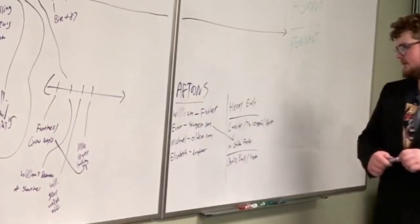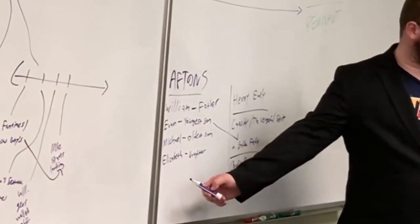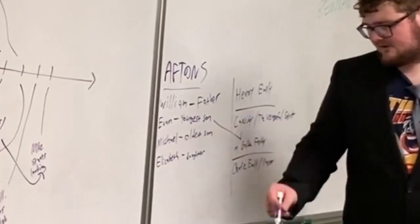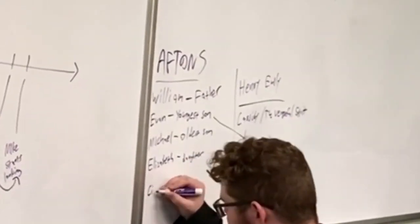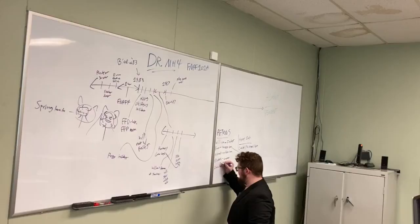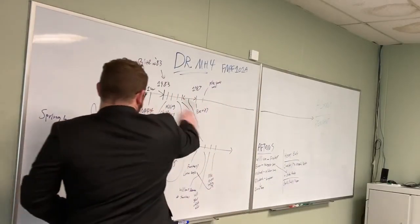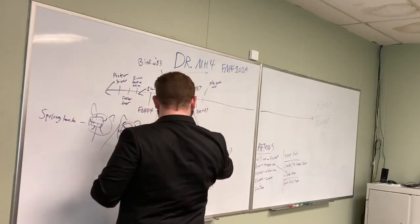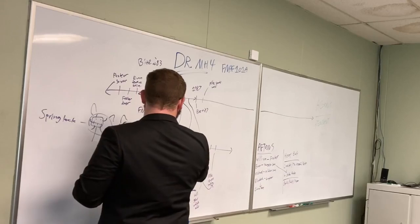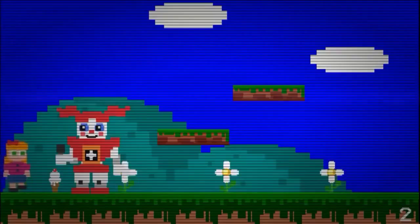In this underground bunker, we meet Elizabeth Afton, the daughter of William Afton, and the person who is possessing Circus Baby. How did that happen, you might ask? Somewhere in all of this, it's presumed that this happened between William not being at Freddy's and the missing children's incident. Elizabeth is killed by baby.